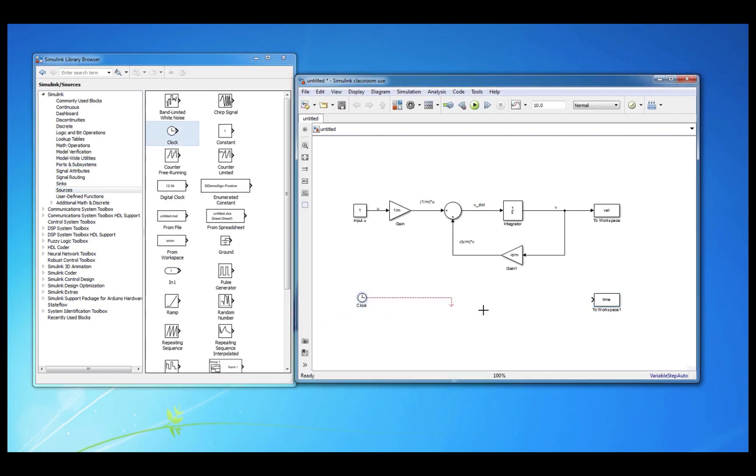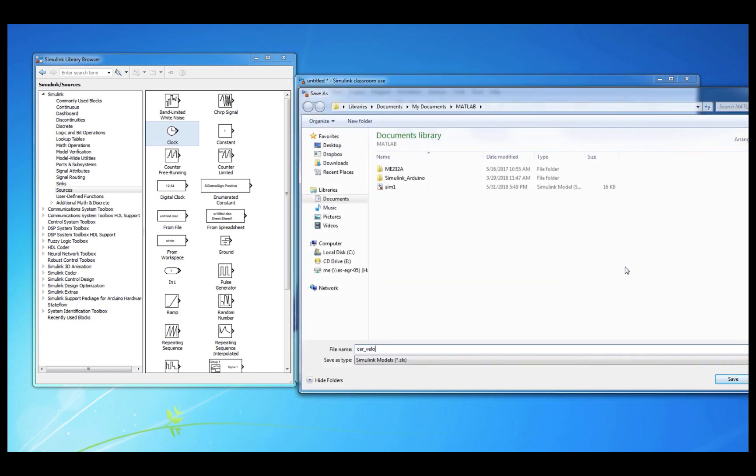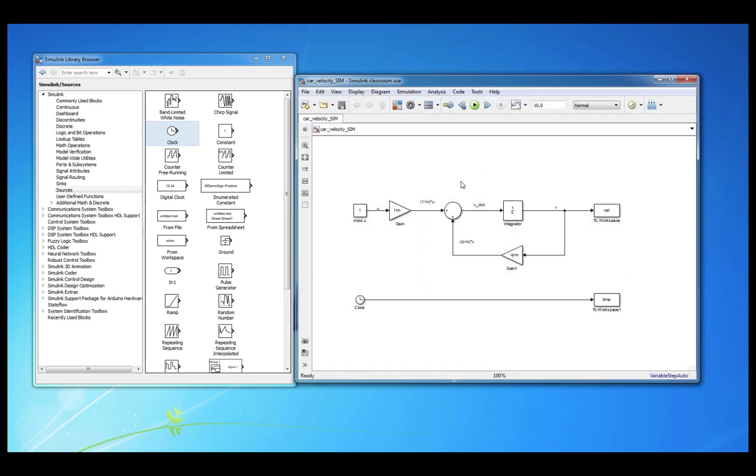Once you have the following block diagram in Simulink, you should save it with a descriptive name, like car_velocity_sim.slx. Note that MATLAB .m files and Simulink .slx files should not have the exact same name. We are now ready to start running some simulations, which we'll do in the next video.